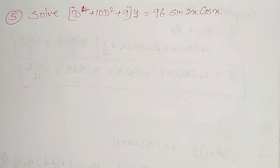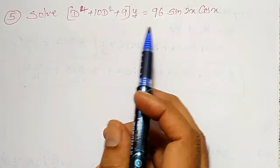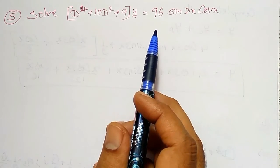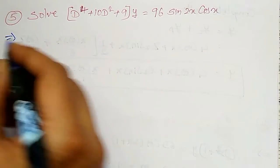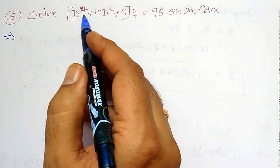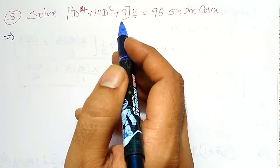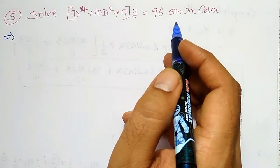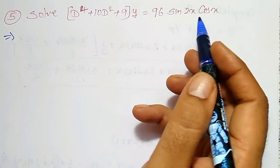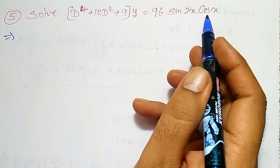In this video, one non-homogeneous differential equation of 4th order I am going to solve here. The given equation is d to the power 4 plus 10d squared plus 9 into y equal to 96 times sin 2x into cos x.